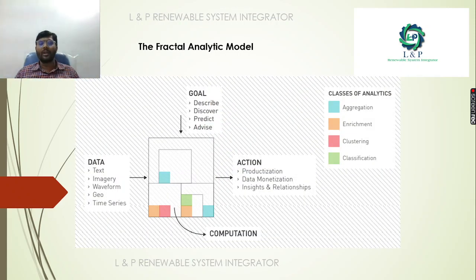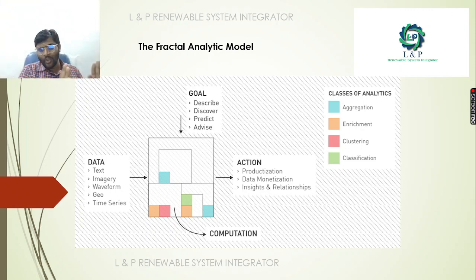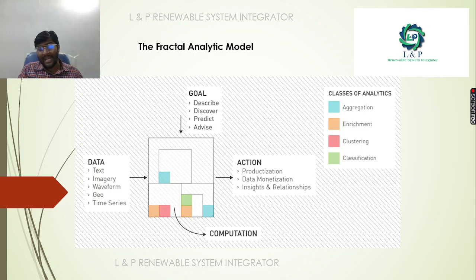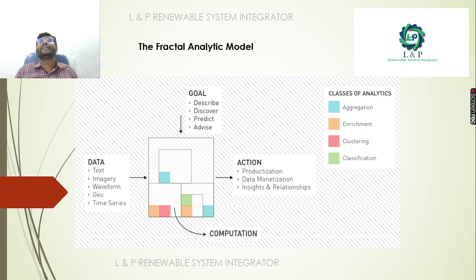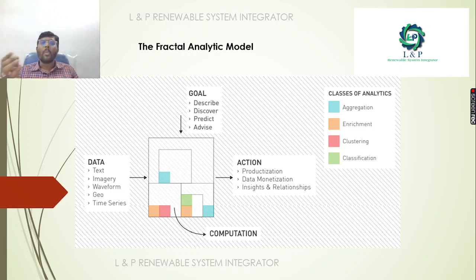In the fractal analytical model, different classes of analytics — aggregation, enrichment, clustering, and classification — all occur. The important data types are text, image, waveform, geo, and time series — data can be of any form. The important goal is to describe the data, discover from the data, predict from the data, and advise us to take action — including what productization and data modernization can be performed and what insights and relationships emerge from this model.